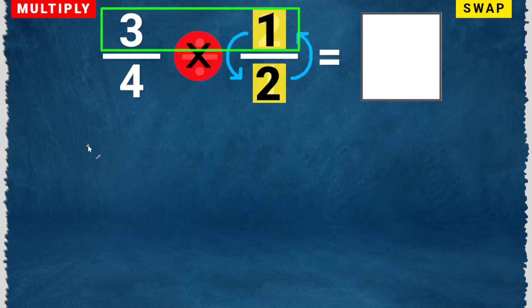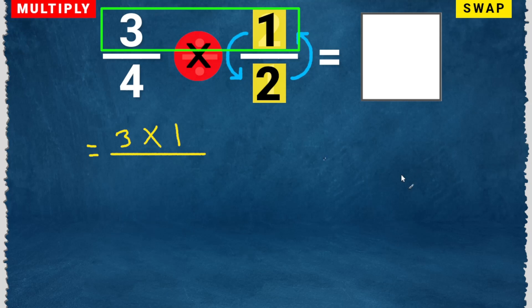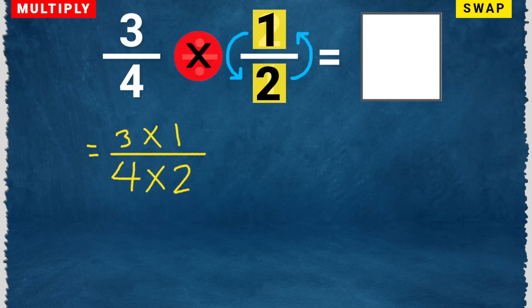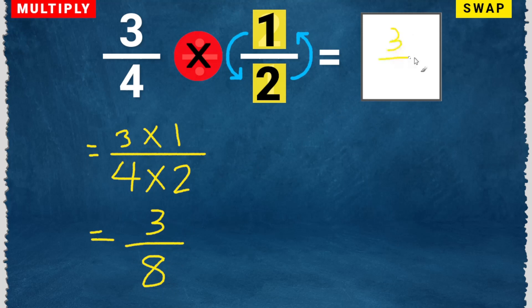Multiply the numerators: 3 times 1. Then multiply the denominators: 4 times 2. 3 times 1 is 3, and 4 times 2 is 8. So the answer is 3 over 8.